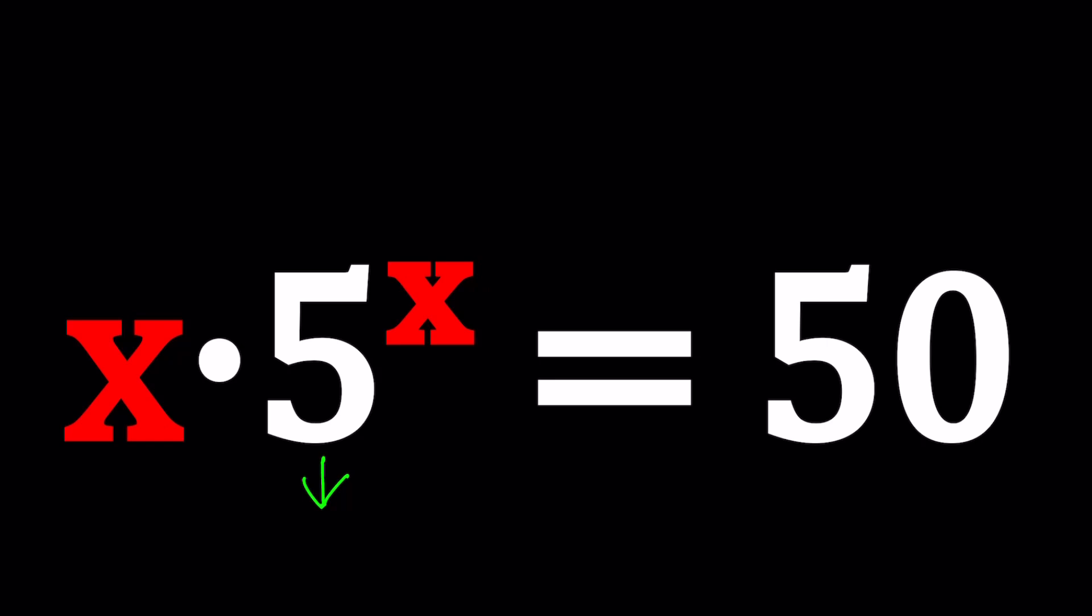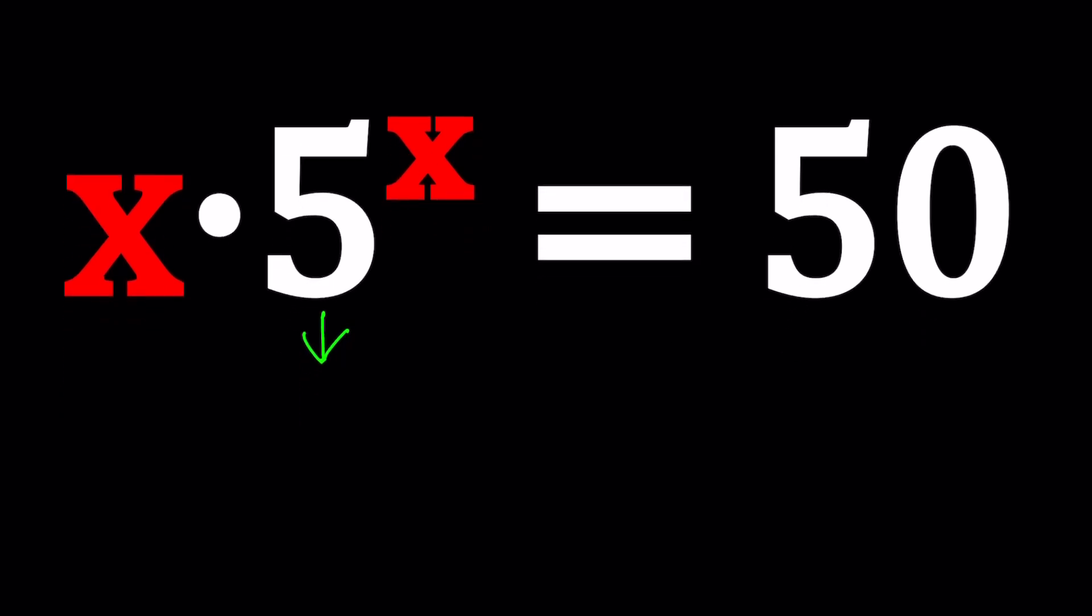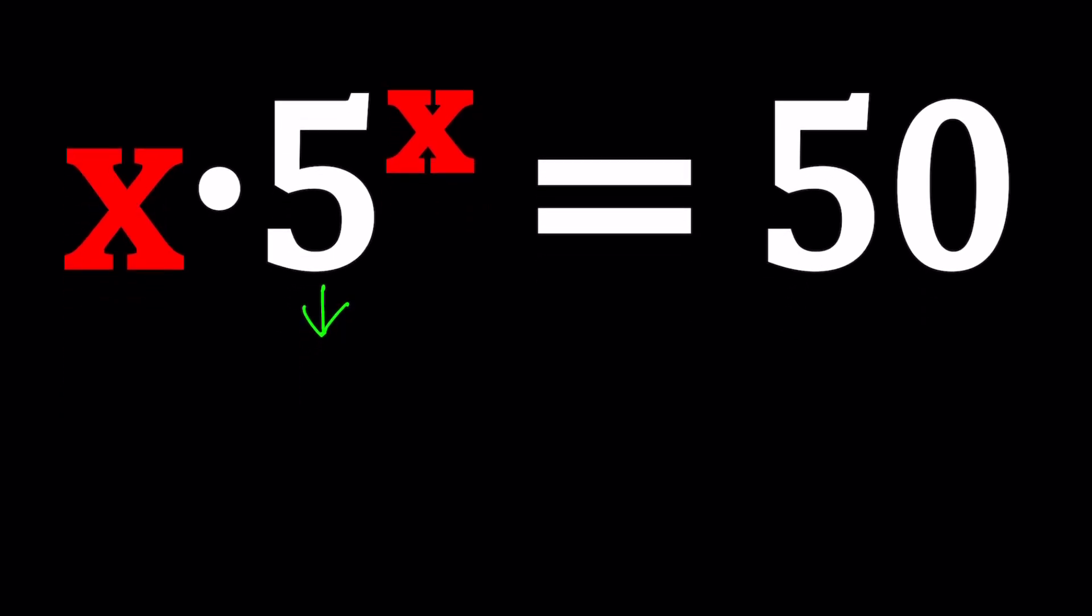Obviously, when you have a product like this, you want to have e at the base. E is Euler's number, which is about 2.7, right? And that's actually the base for the natural logarithm. So we want to turn this 5 into e.